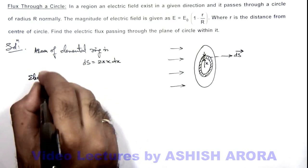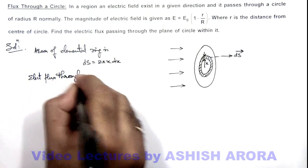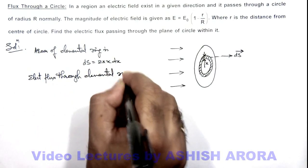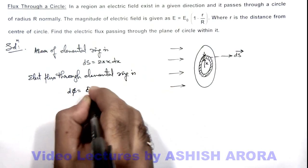So here we can write electric flux through elemental ring is dφ = E dS.